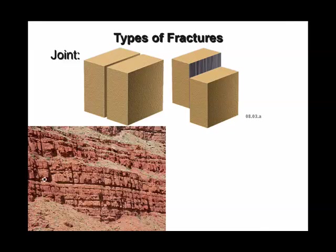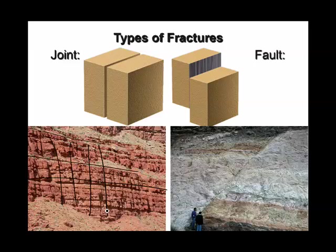In this rock here, you can see horizontal bedding planes, but the vertical lines are joints. Whereas in this fault, you can see not only is there a crack in the rock, but some movement has taken place along that crack.